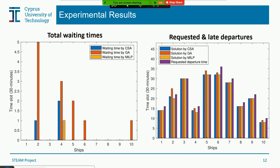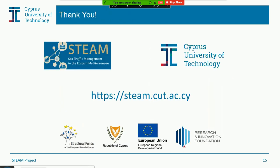A clarification was made that the purple lines in the chart represent the requested departure time, which is provided by the shipping companies. The moderator then announced that contact details for Shiraz and all presenters would be shared, so anyone with further questions could contact them at another time.